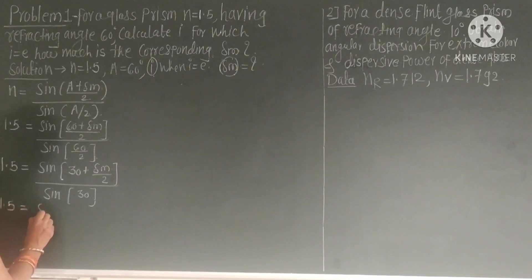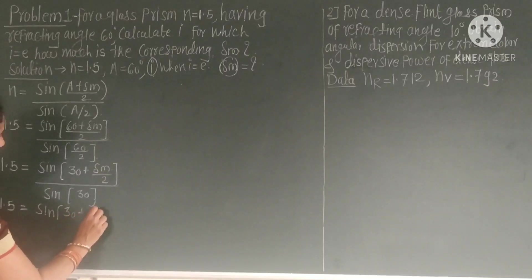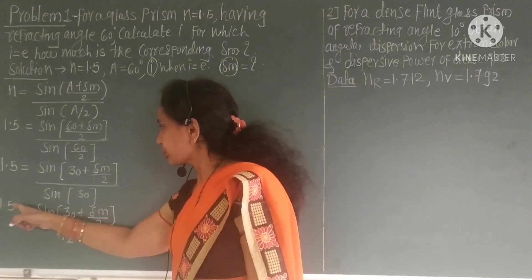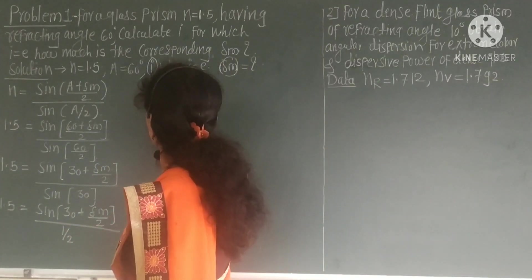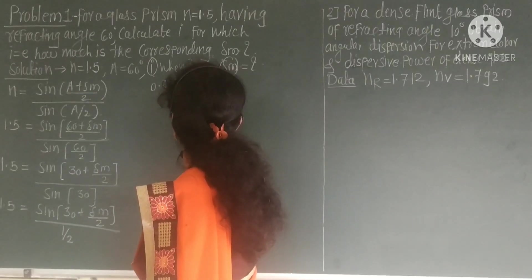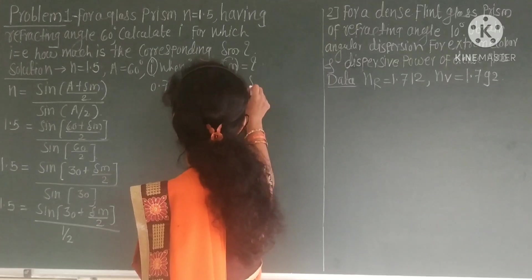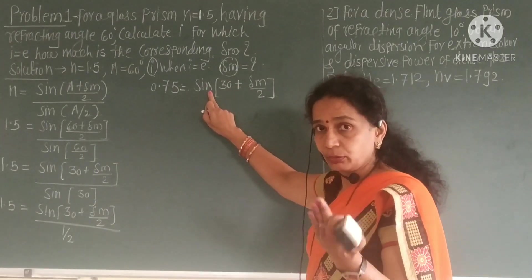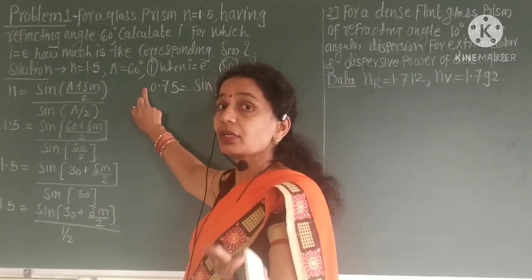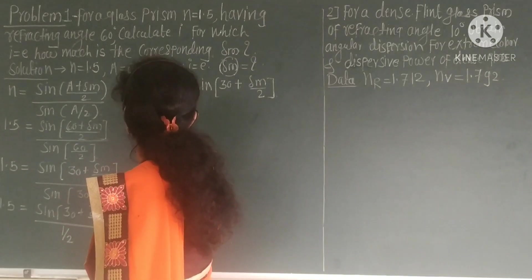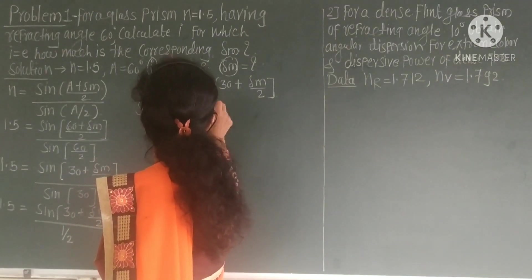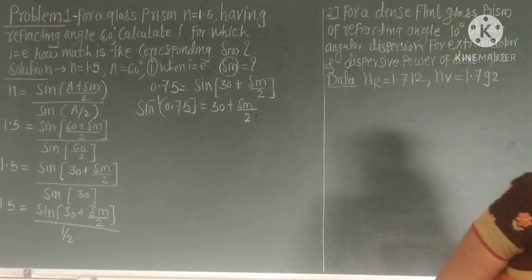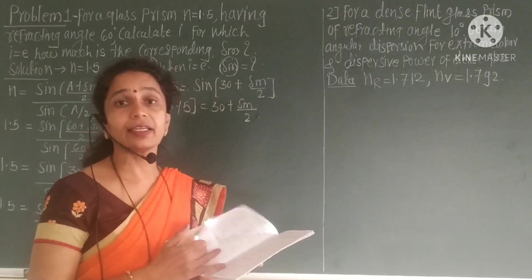sin 30 is 0.5, so 1.5 equals sin(30 + δm/2) divided by 0.5, which simplifies to sin(30 + δm/2) equals 0.75. Taking sin inverse: sin⁻¹(0.75) equals 30 + δm/2. Now we use the log table to find sin⁻¹(0.75).